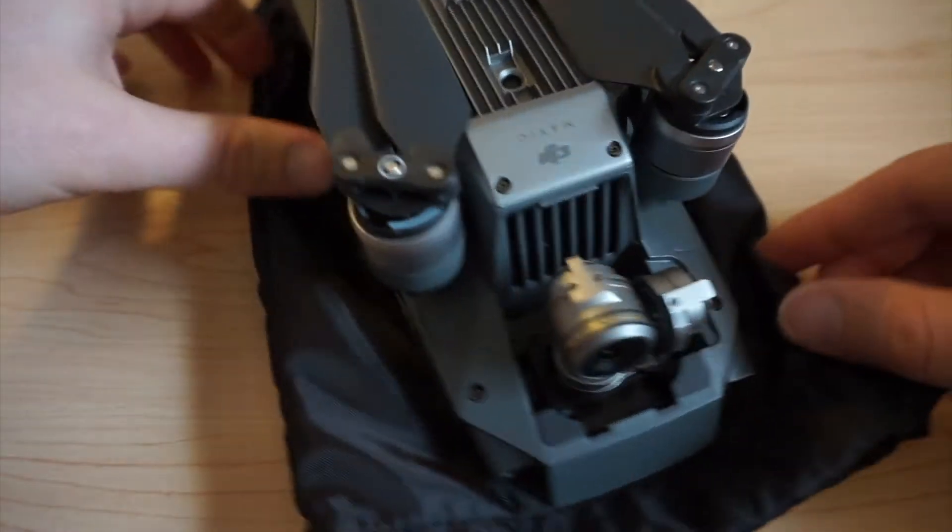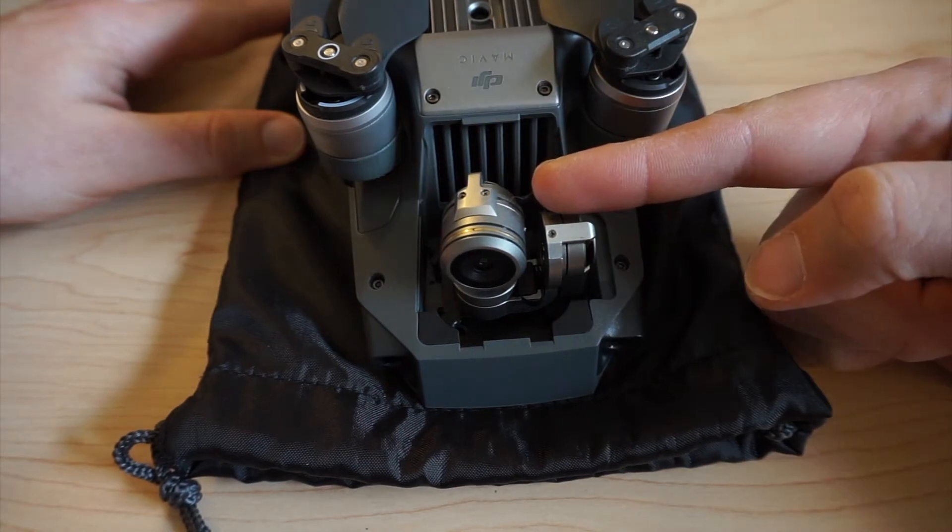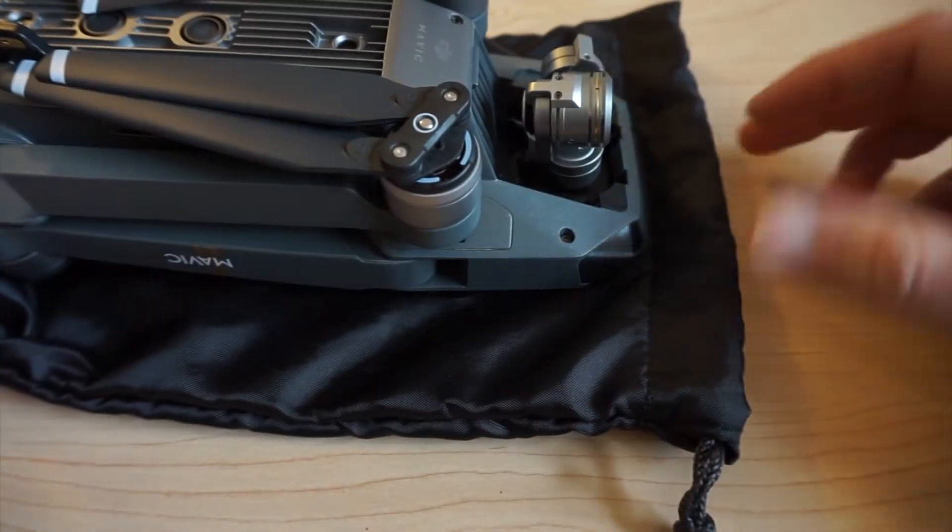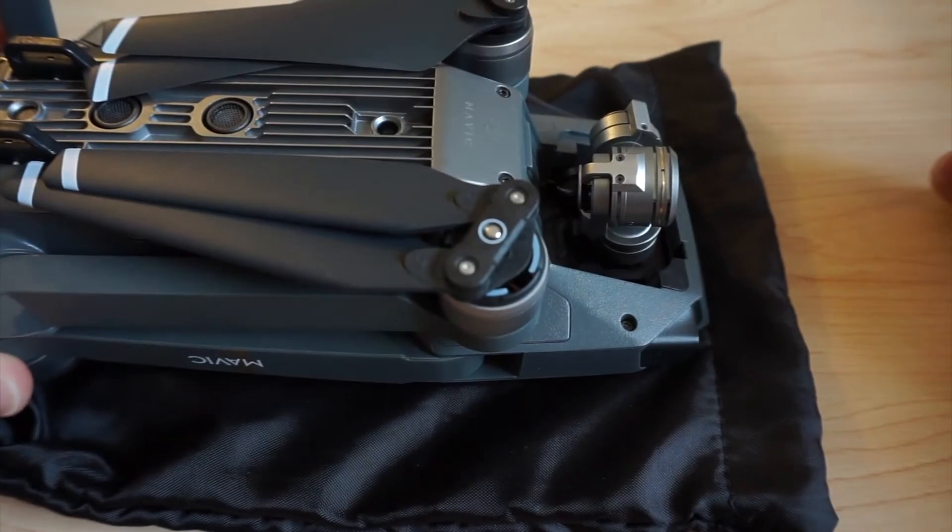Okay so stupid of me I know, but I've already lost the gimbal clamp because it's clear and small. Therefore nothing is protecting the gimbal now. So what did I do?